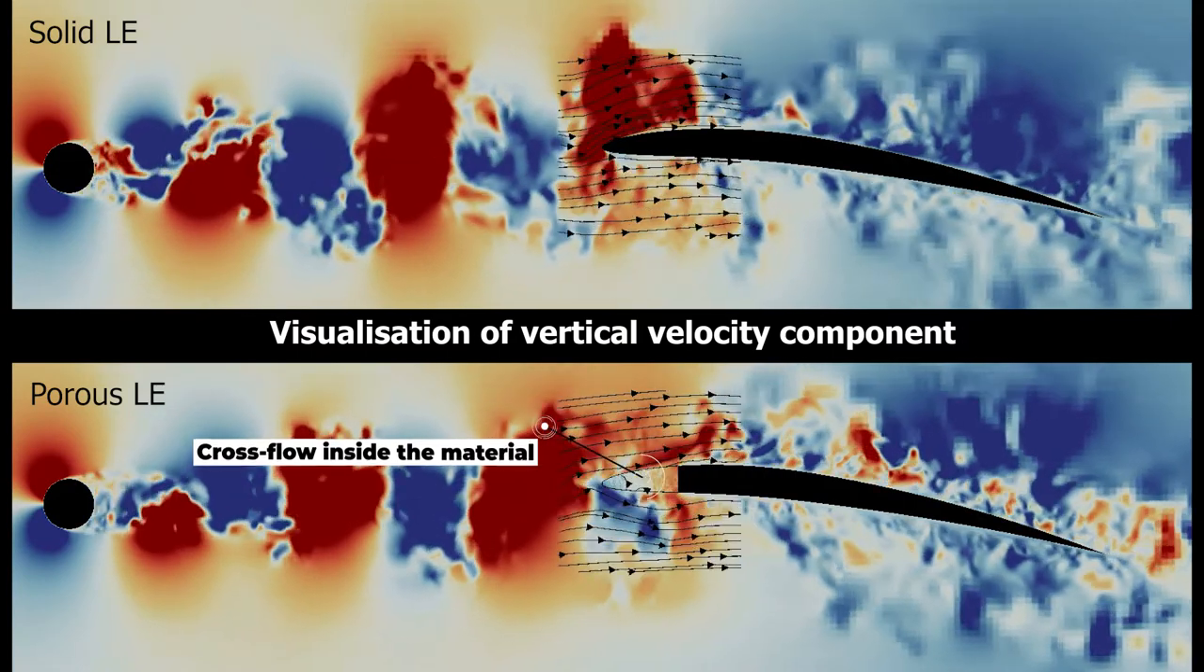The particular drawback of the porous material is, well, it is porous. As you can see here, the flow from the lower side of the porous leading edge is being sucked to the other side, which leads to a huge increase in flow instability.